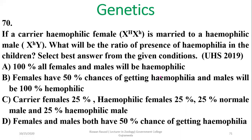Question 70: If a carrier haemophilic female is married to a haemophilic male, what will be the ratio of haemophilia in the children? Both male and female can be sources of the recessive allele. Carrier females will be 25%, haemophilic females 25%, normal males 25%, and haemophilic males 25%. Overall, there will be a 50% chance of children being affected by haemophilia.